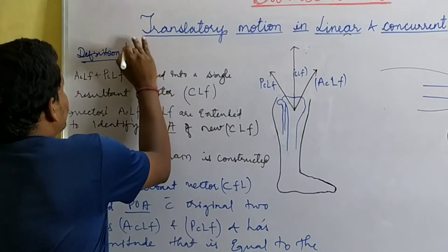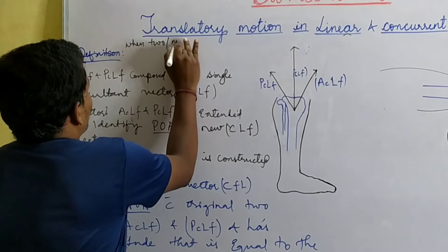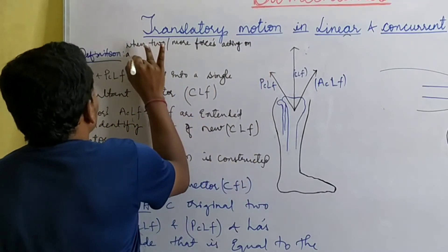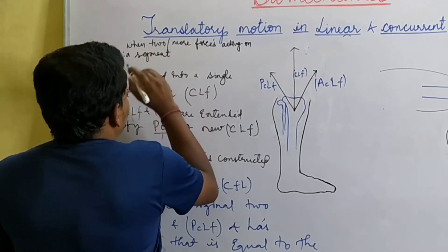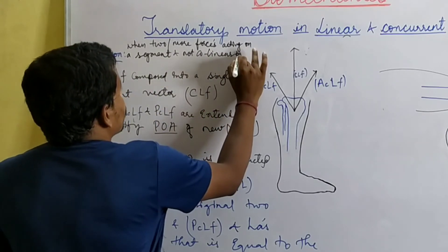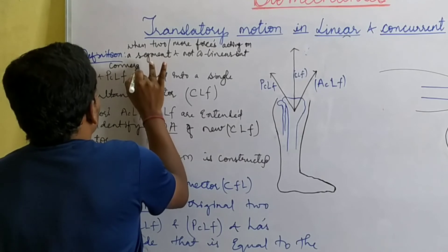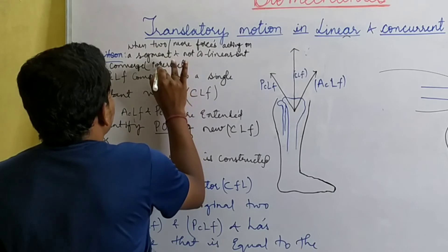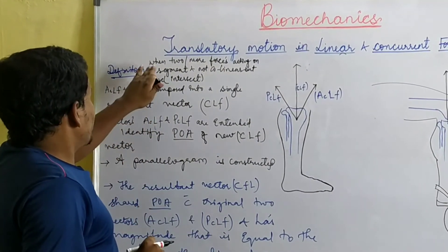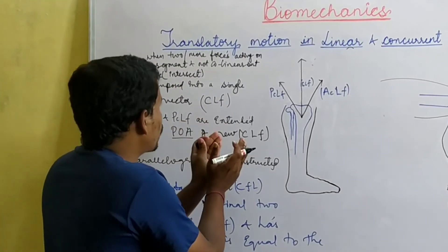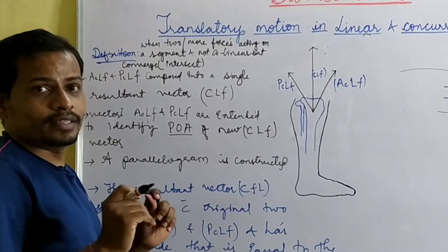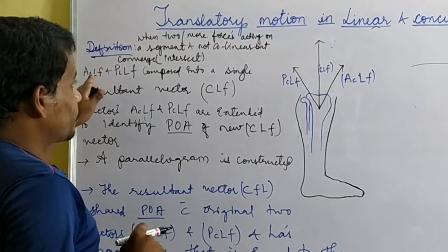Now we'll see the concurrent force system. When two or more forces acting on a segment are not collinear — they are not in a linear direction — but converge, that is intersect, then a concurrent force system exists. This is the definition: when two or more forces acting on a segment are not collinear but converge to intersect, only then does the concurrent force system exist.